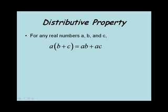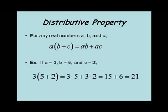Now let's look at the distributive property. This property says for any real numbers a, b, and c, a times (b plus c) equals a times b plus a times c. This is a property we use a lot. In our example, a equals 3, b equals 5, and c equals 2. So 3 times (5 plus 2) equals 3 times 5 plus 3 times 2. In the first case, 3 times 7 equals 21. In the second case, 15 plus 6, which is also 21. This works for any real numbers a, b, and c.